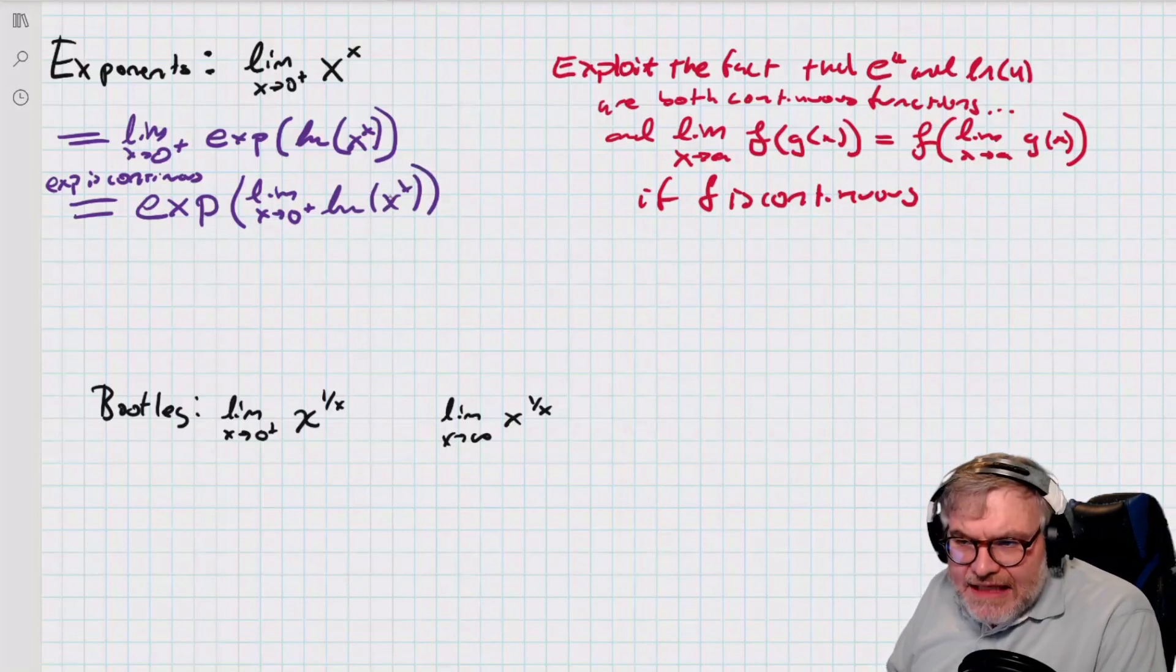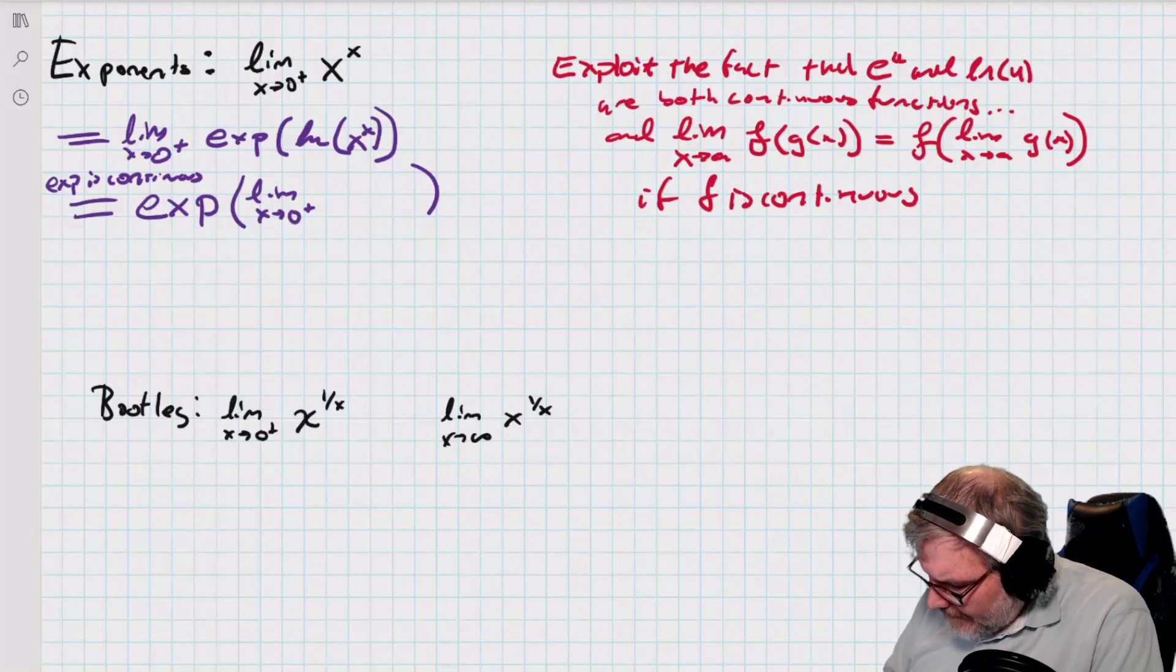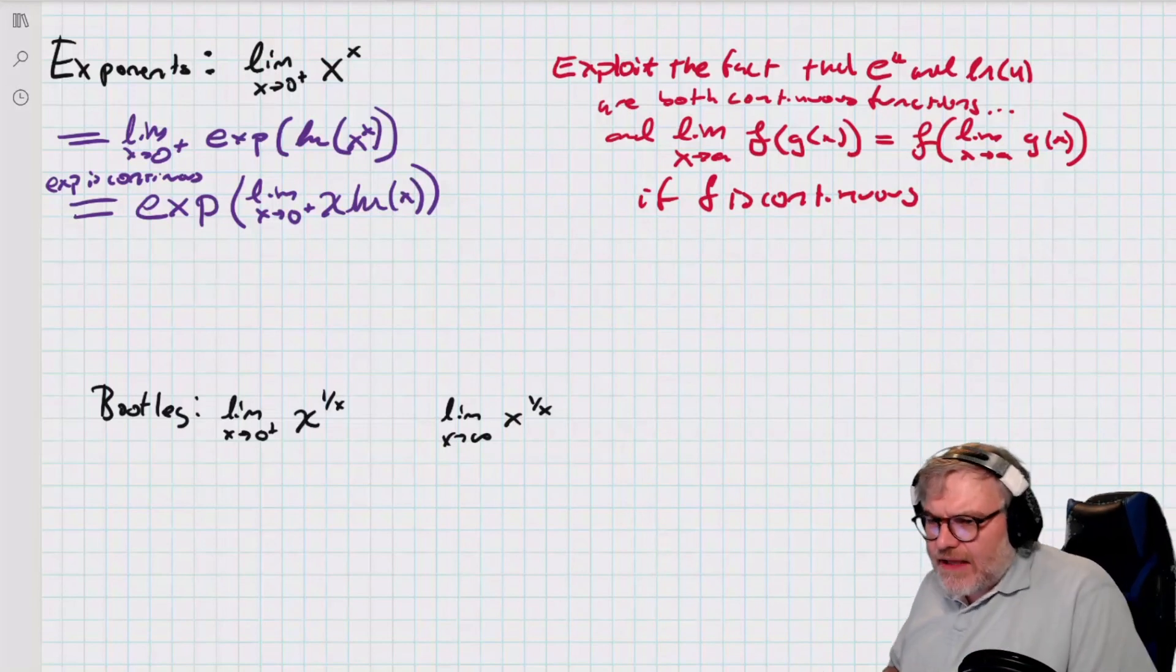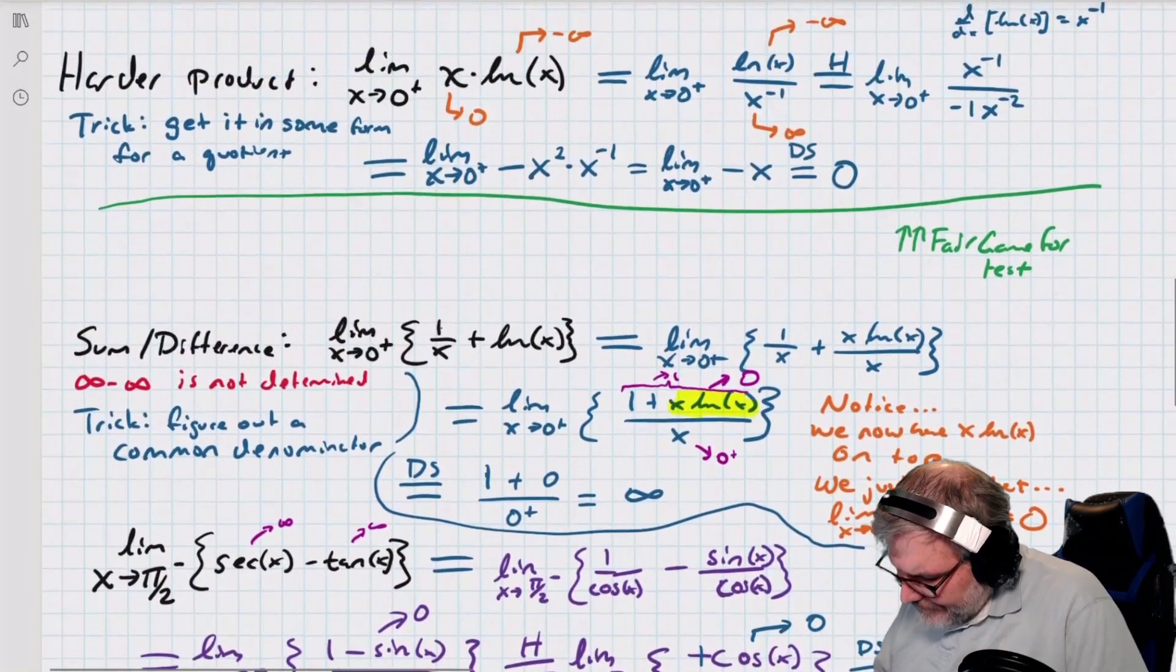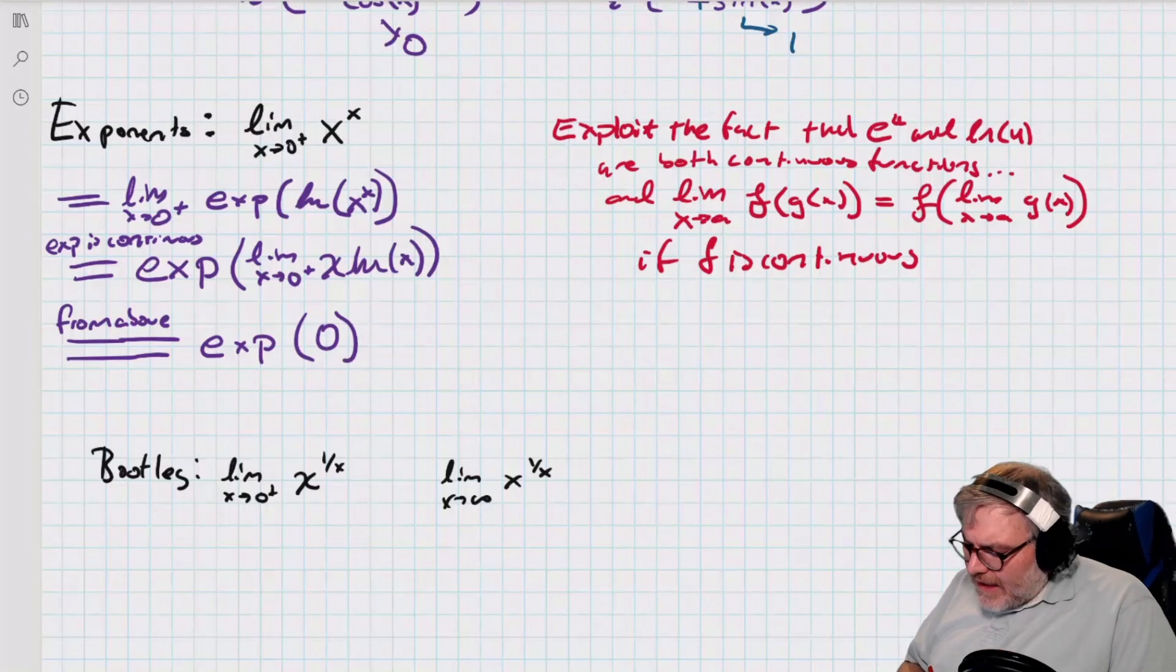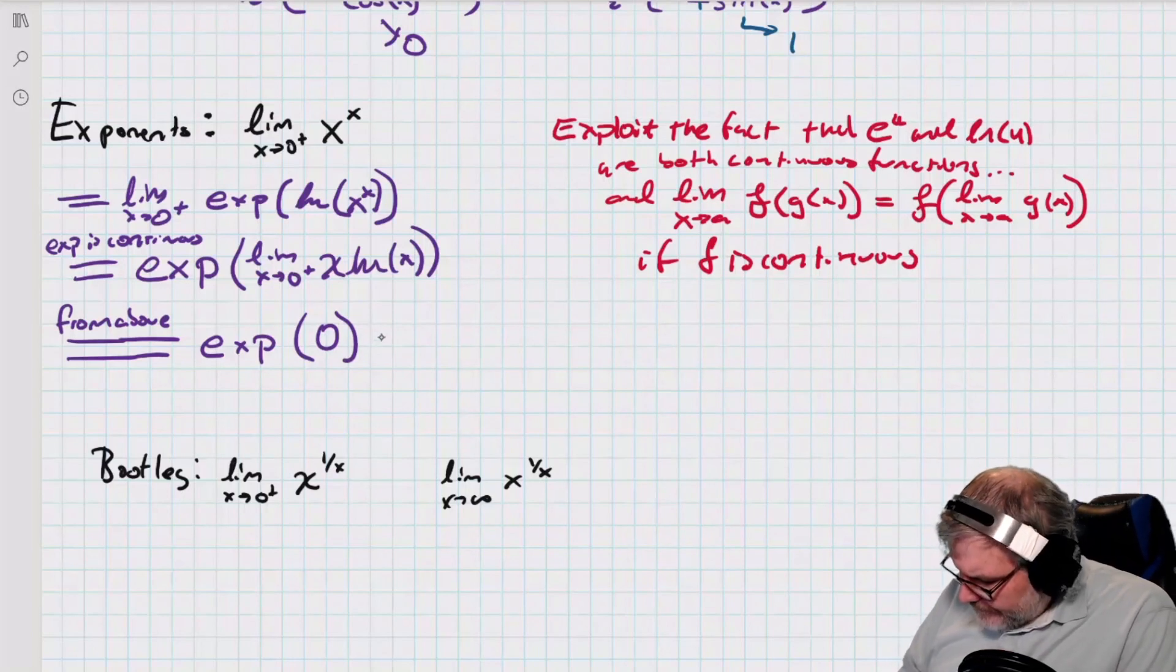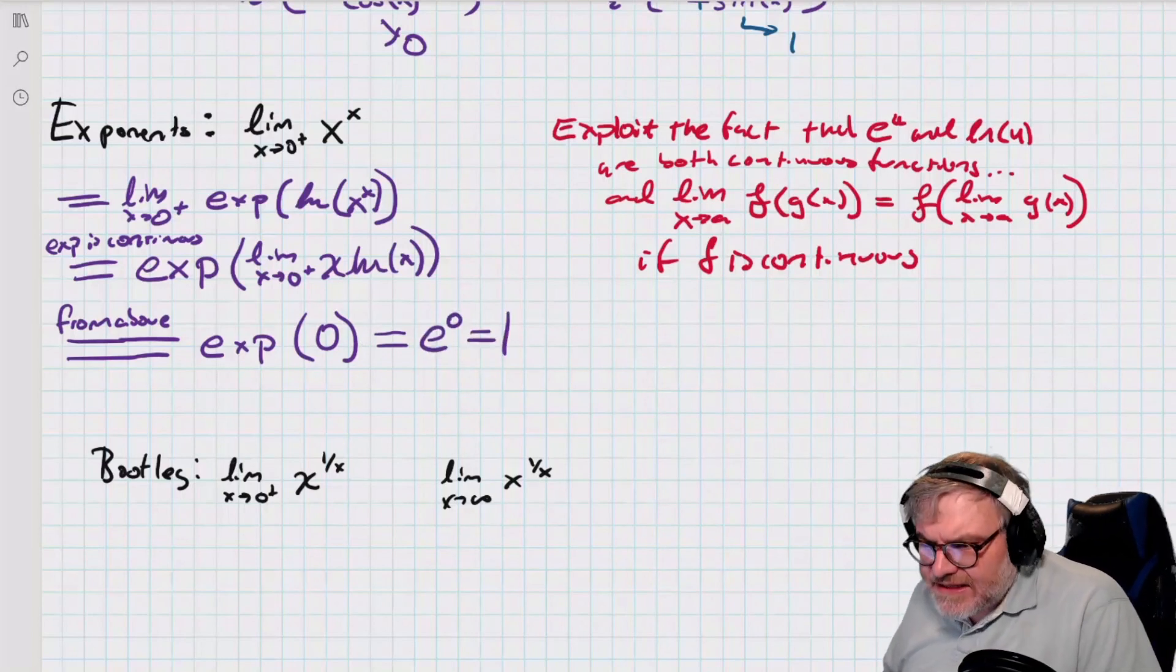Now, ln of x to the x is really x times ln of x. All right. Now, I've got something I can work with. And this x ln of x bit, I've actually already done that. I already know that that goes to zero. And the exponential of zero, well, that's easy. So, that's how you do those x to the x bits.